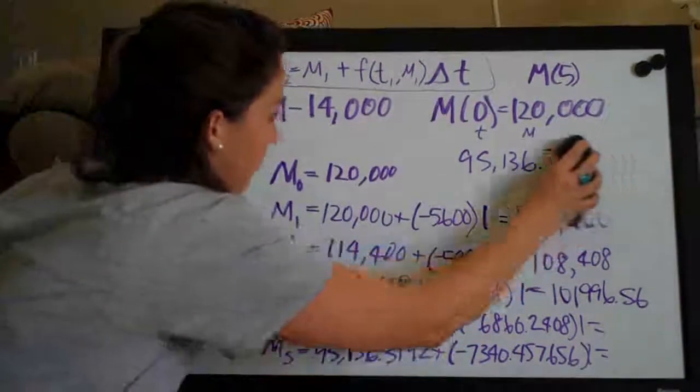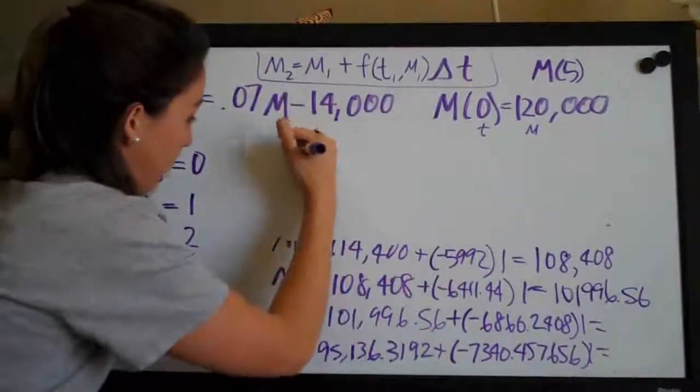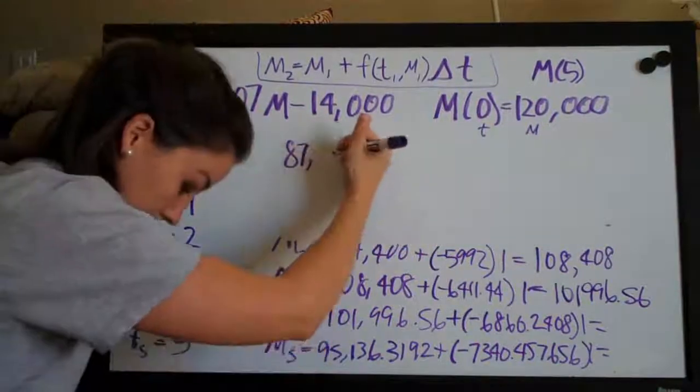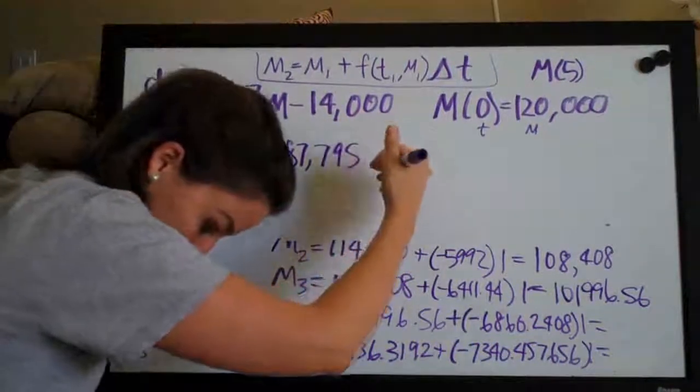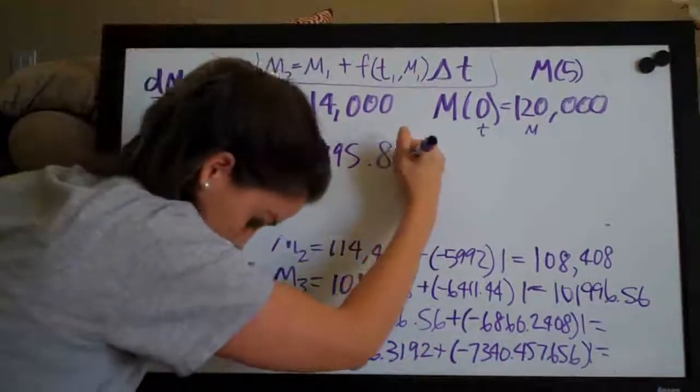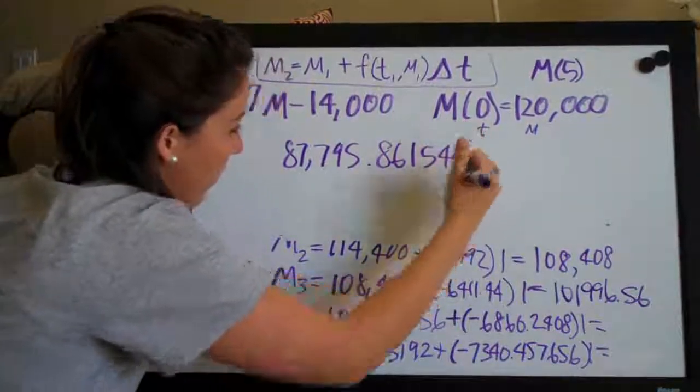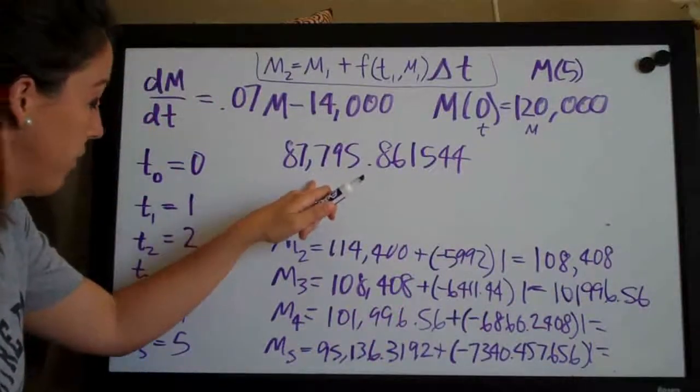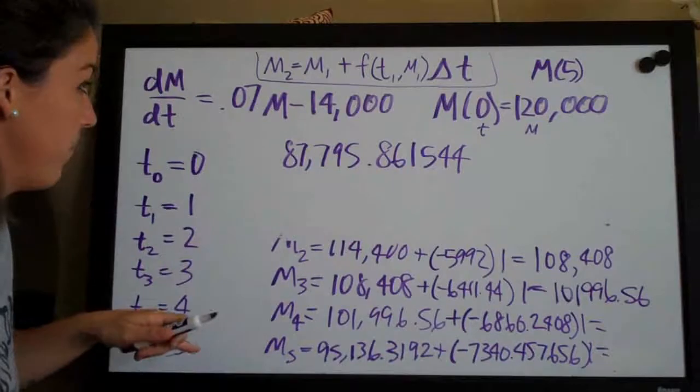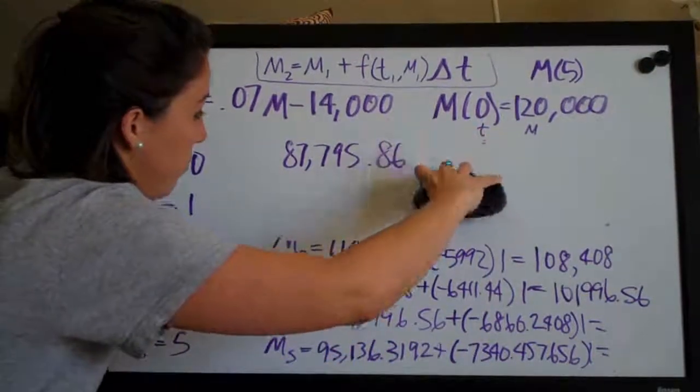And of course, now that we've gone through all of the steps and this is the final number for m5, we can go ahead and round and I'll round that to 87,795.86.